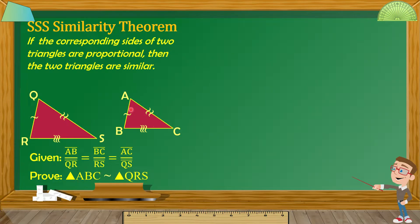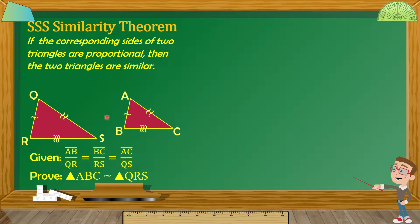Meron tayong given: triangle ABC and triangle QRS. Makita natin dyan mga markings — ibig sabihin yung mga corresponding sides ng dalawang triangle na yan ay proportional. Masasabi natin by SSS Similarity Theorem na itong dalawang triangle na ito ay similar, kasi napakita naman dyan na yung mga corresponding sides niya ay proportional.